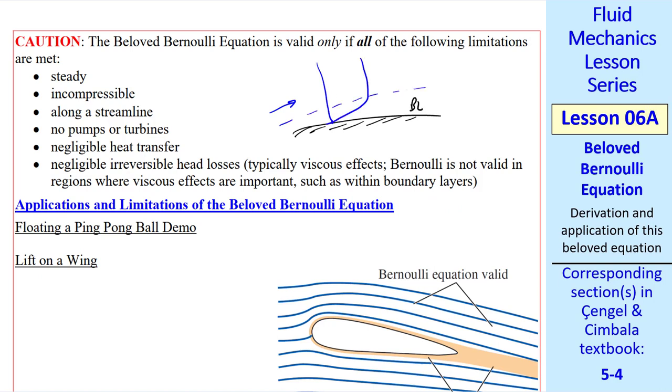Let's take flow along a wall where there's a boundary layer. This region within the boundary layer is a region where viscous effects are important, so Beloved Bernoulli does not apply. This region out here above the boundary layer is a region where viscous effects are not significant. In that region, Beloved Bernoulli can be used.